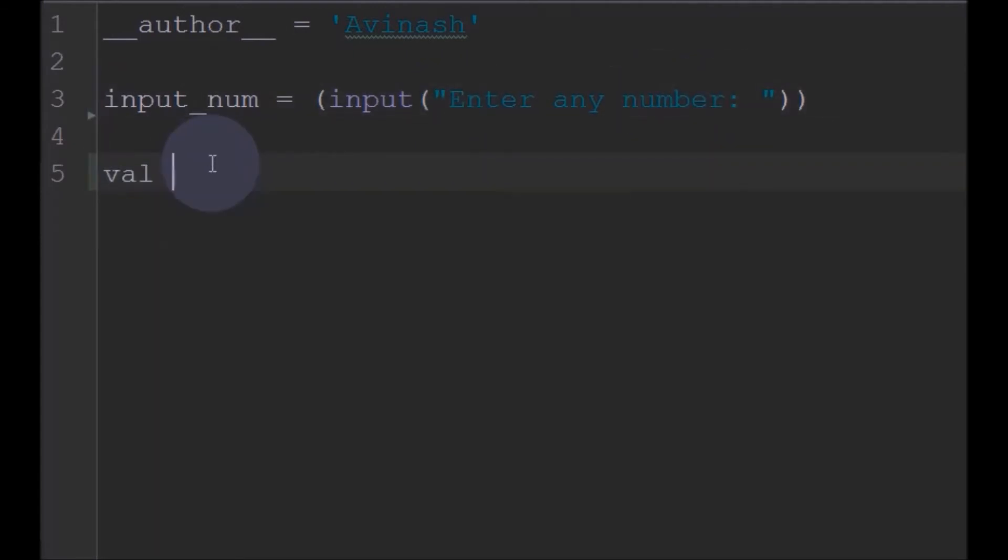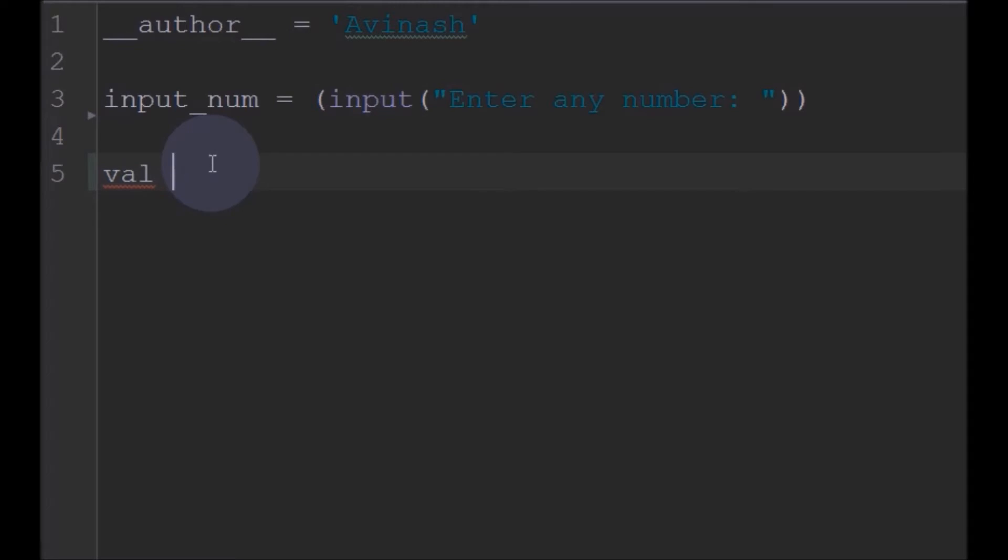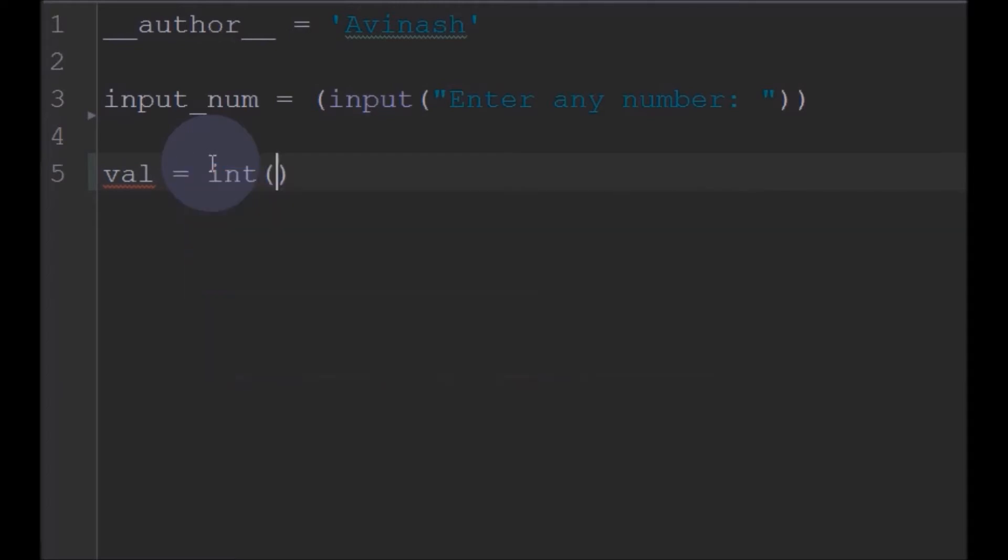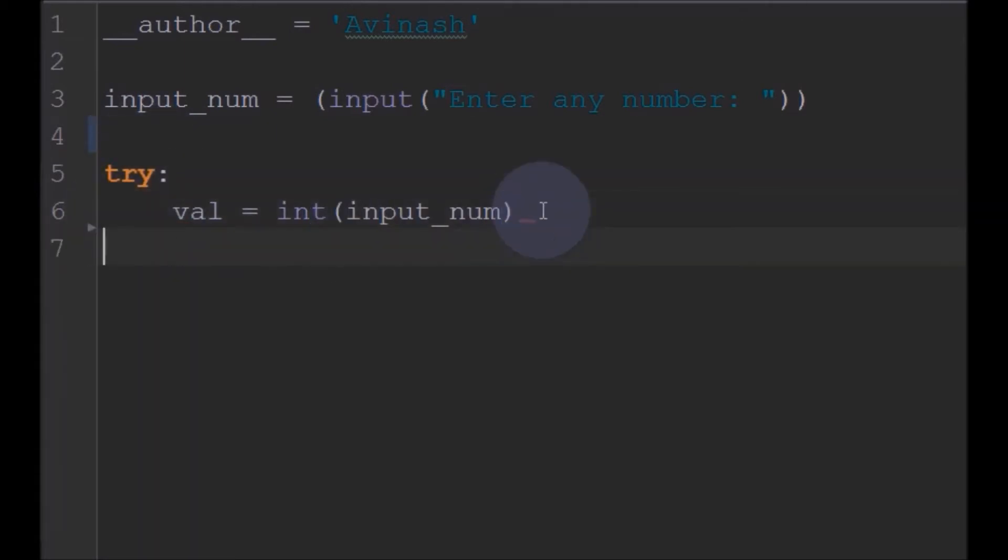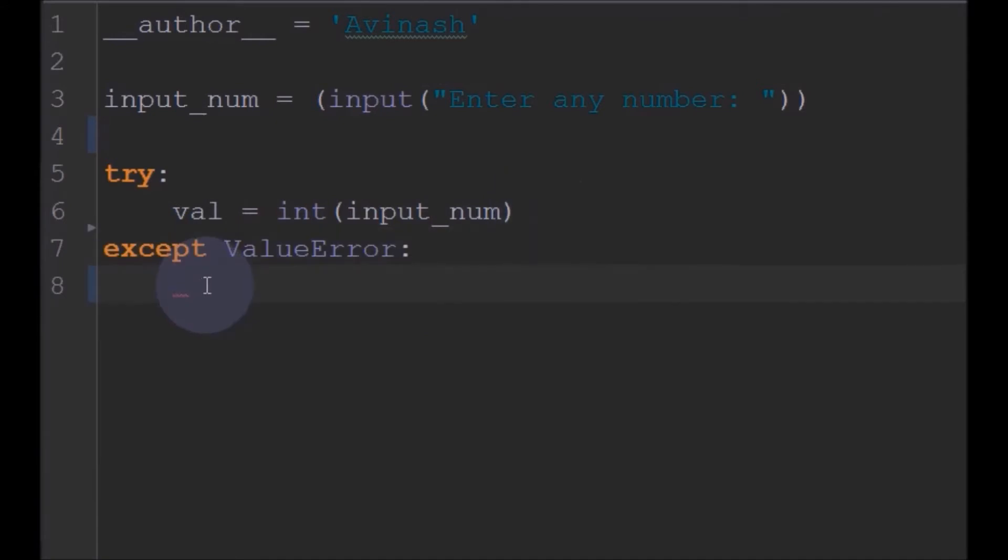And now I will copy this value in some variable. I will also use try and except so that we can enter only integer variables. I will print some error, print some text showing that this is not a valid number.